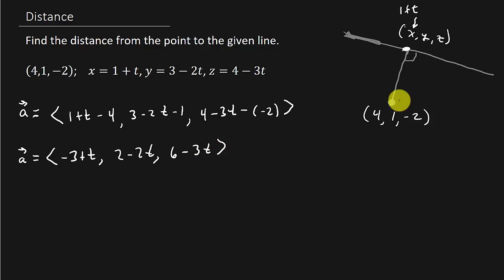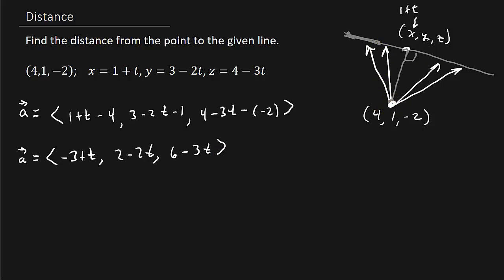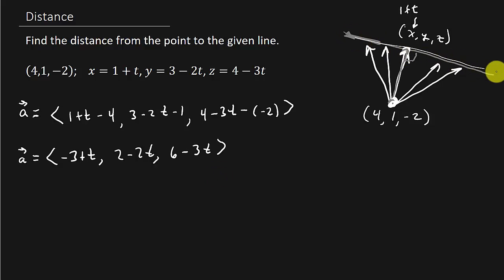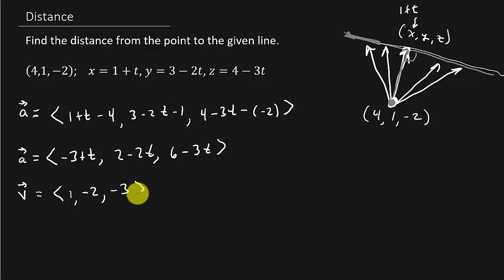Plugging in any value of t gives a vector from our point to some point on the line. But I need the vector that's perpendicular. So let's get the directional vector V for this line — that's the coefficients of t — which gives V = (1, -2, -3). This vector V is parallel to our line.